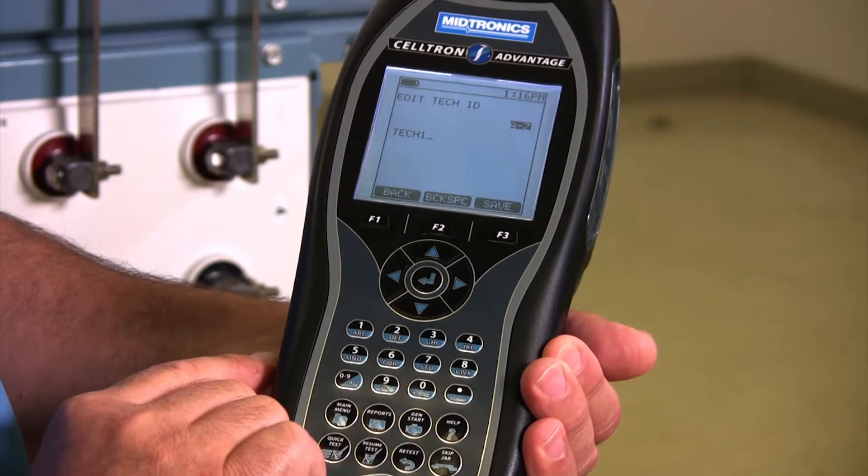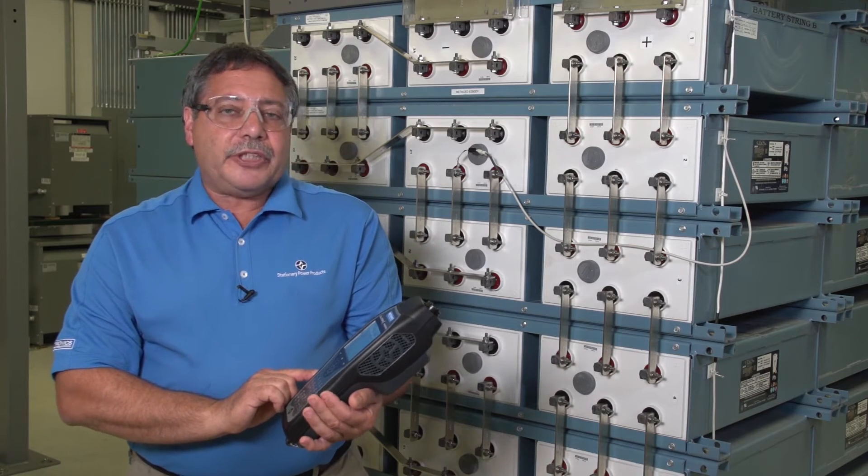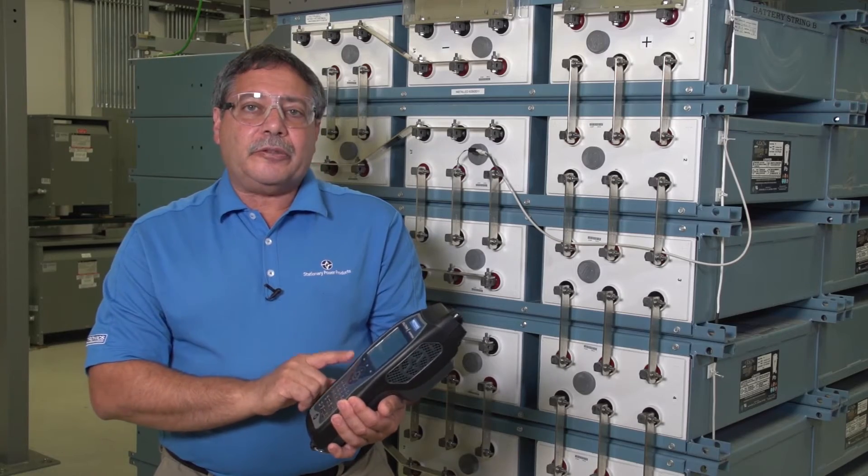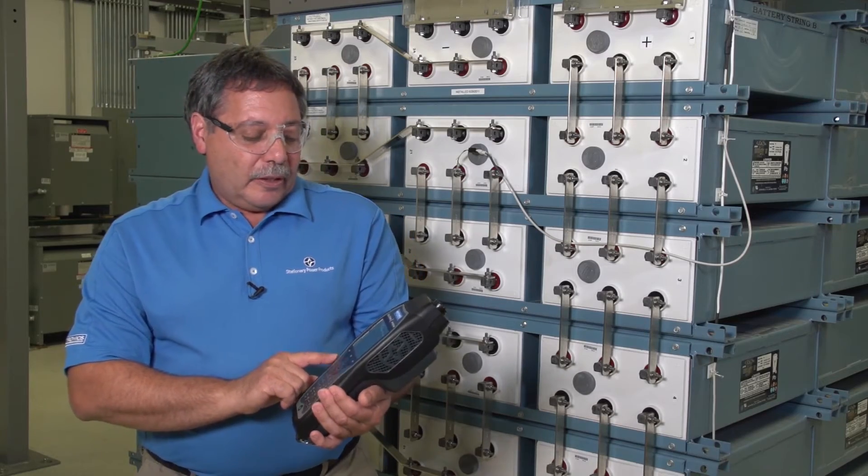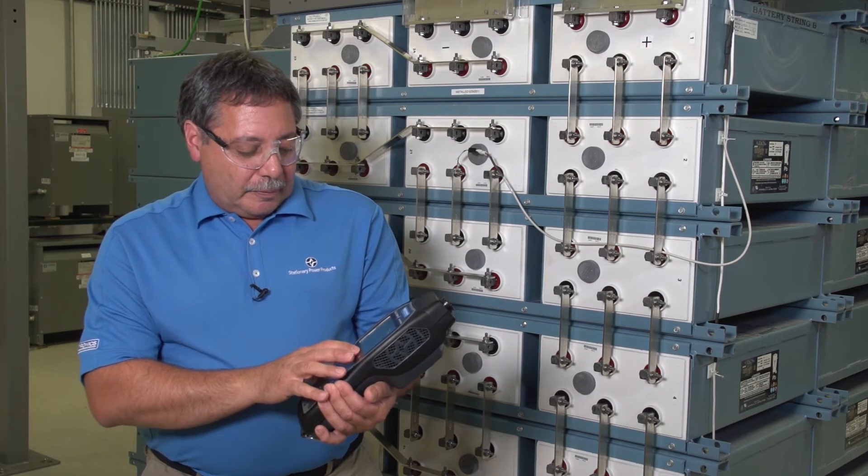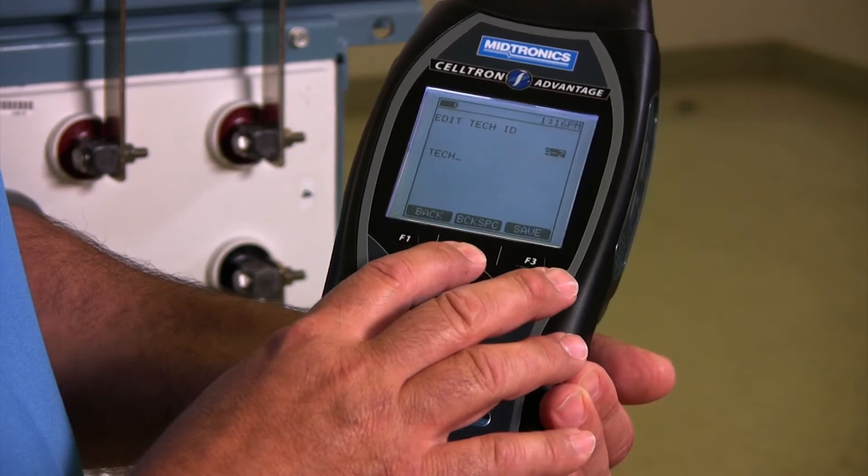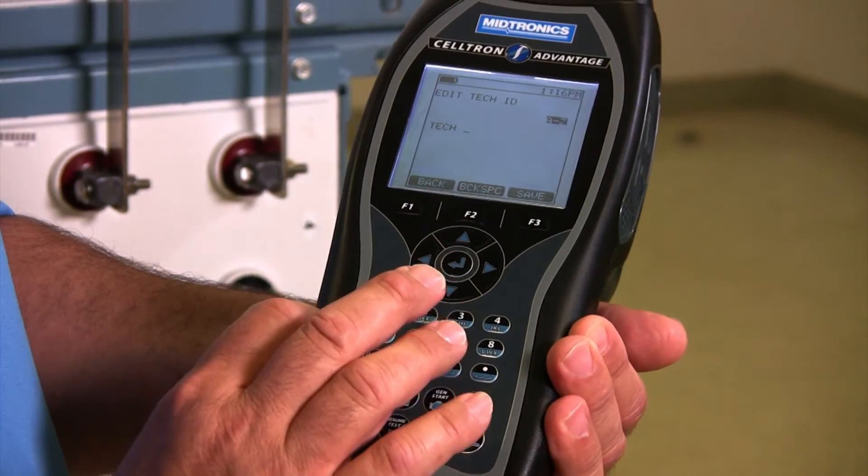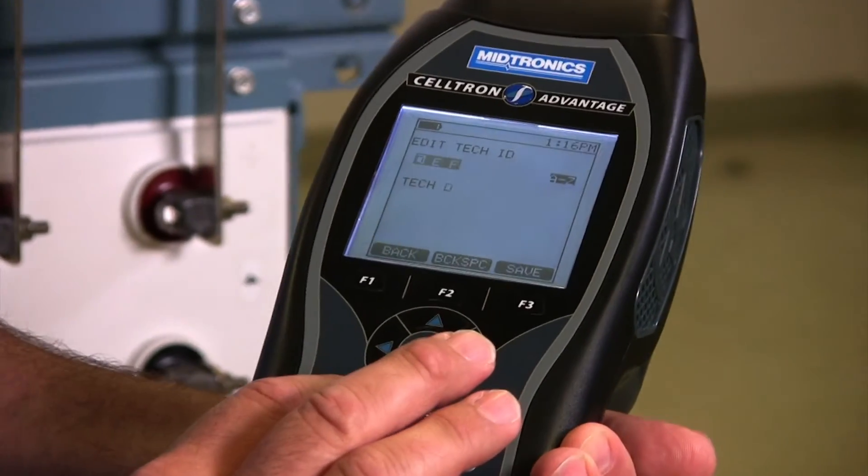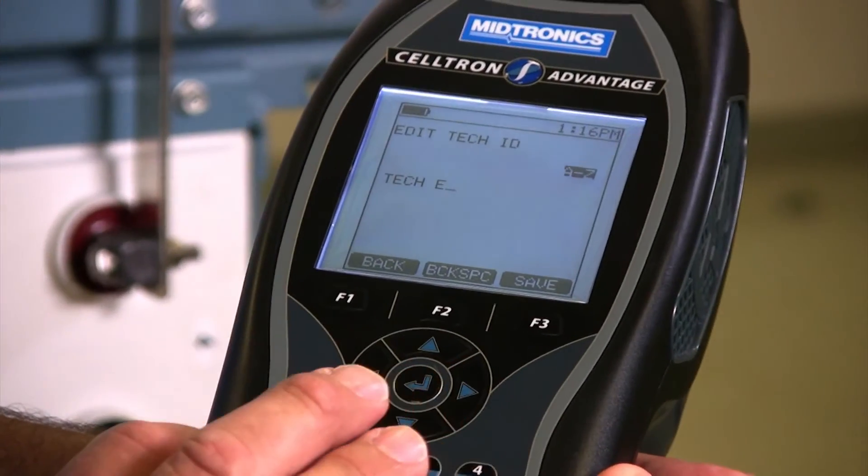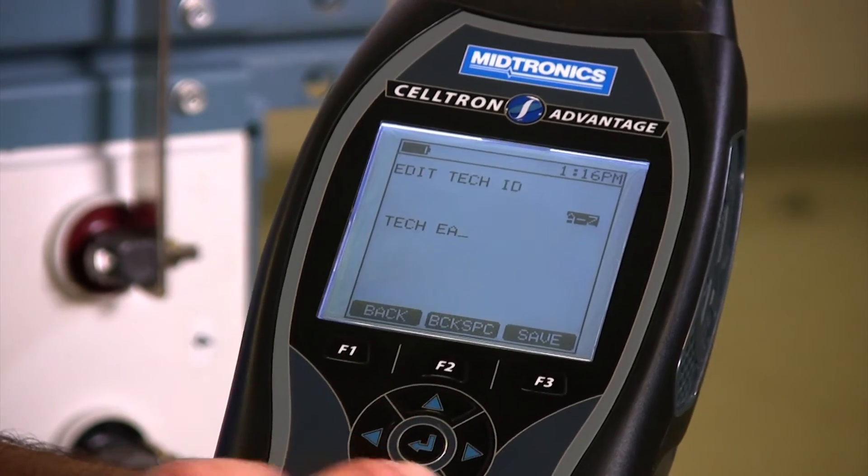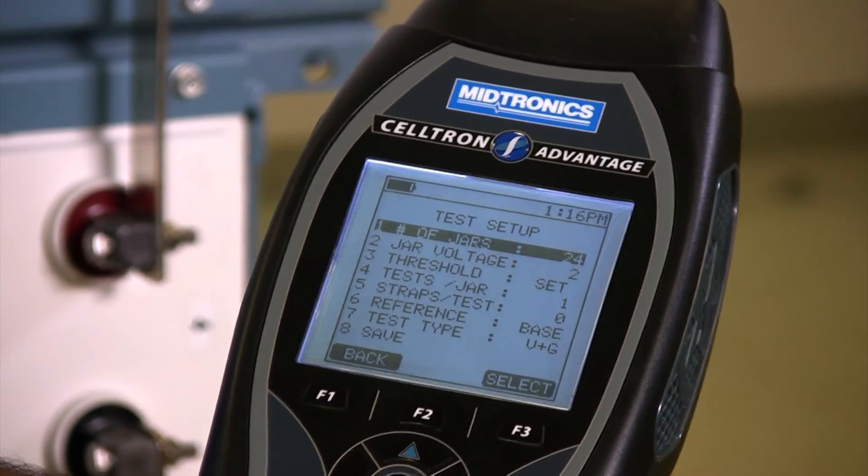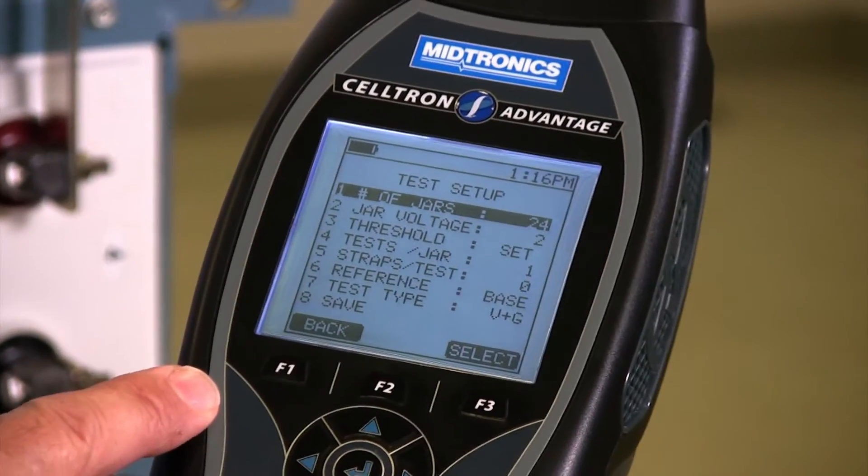Next comes up with tech ID. It's not required to change that. You can leave it as is. The default is tech one. You can put your name in there. You can put your initials in there. Whatever you want to do. I'm going to backspace to clear the one, I'm going to hit space key, and then I'm going to put my initials in. So I'm going to put in EA. So it's tech EA. Save. And now we start our setup for the battery test.